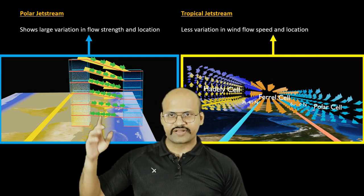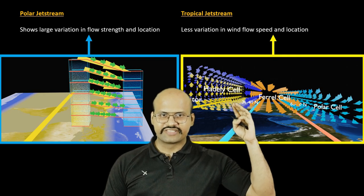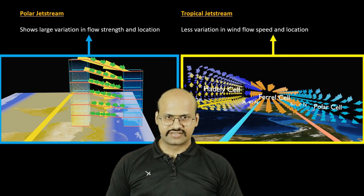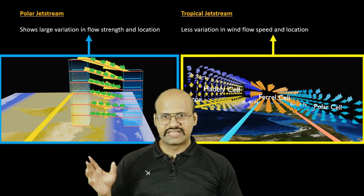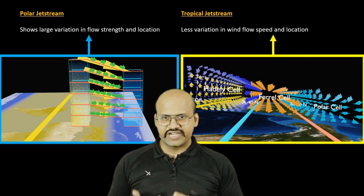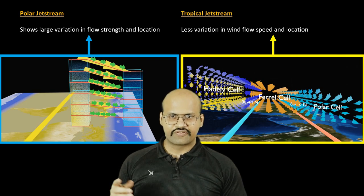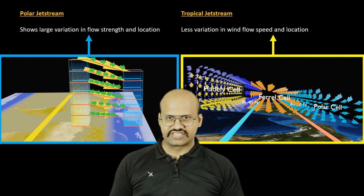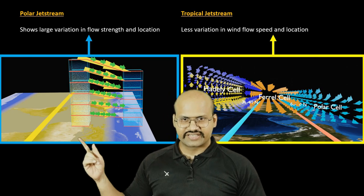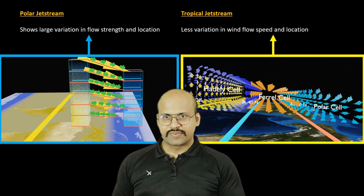So we have seen that the polar jet stream depends on temperature while the tropical jet stream is more dependent on circulation. This circulation is more or less fixed and remains permanent, while temperature variation varies in summer and winter. In winter, the temperature difference is very high, therefore the pressure gradient is high and we see a very strong jet stream, while in summer the temperature difference is not as high and the polar jet stream weakens.